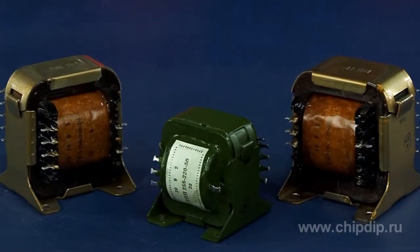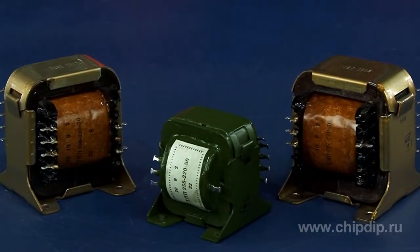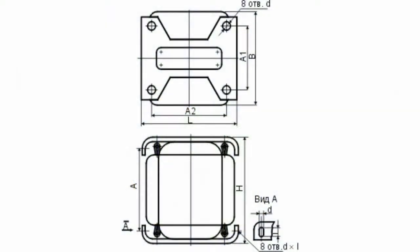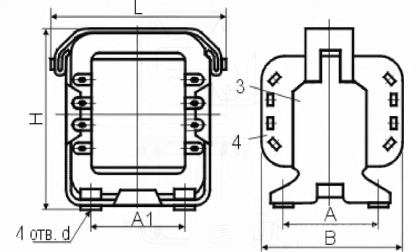The low secondary voltage is why they are usually used to power semiconductor circuits. The presence of multiple secondary windings designed for different voltages and currents, and the possibility of serial and parallel connections, allow obtaining all possible combinations of currents and voltages to power devices for various applications.